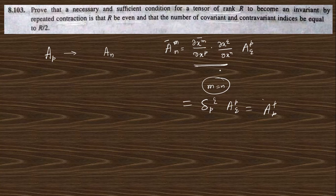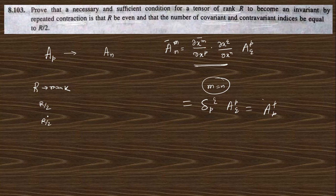For invariance, you must have an equal number of covariant and also an equal number of contravariant indices, such that they cancel out and the result becomes invariant. So if you have a rank R tensor, you need R/2 contravariant and R/2 covariant indices so they cancel and it becomes invariant. Theoretically, this is why the repeated contraction is invariant.